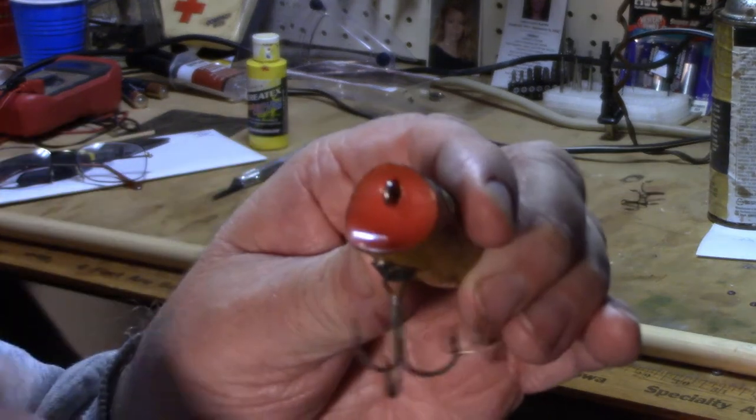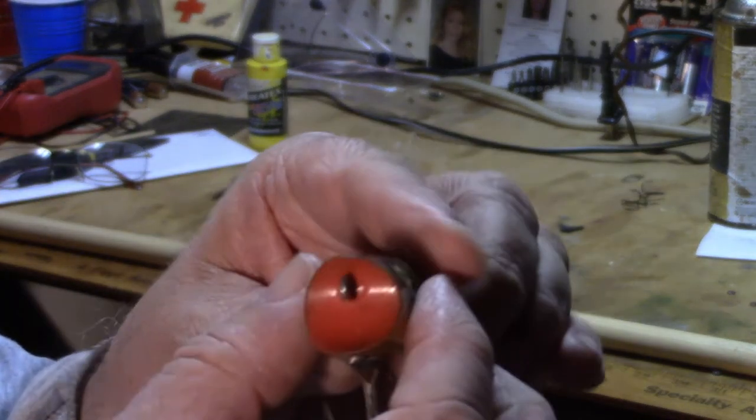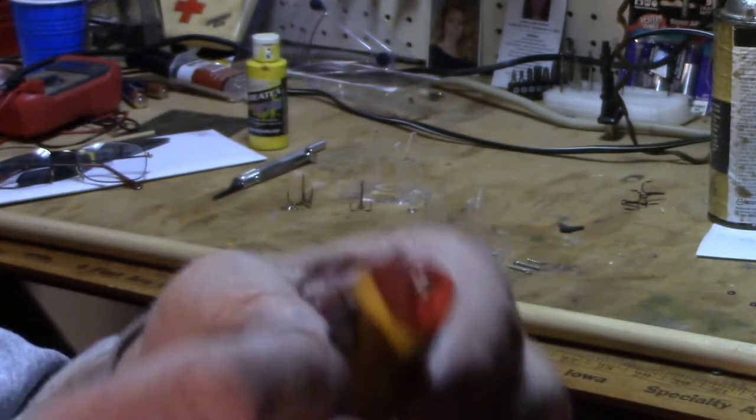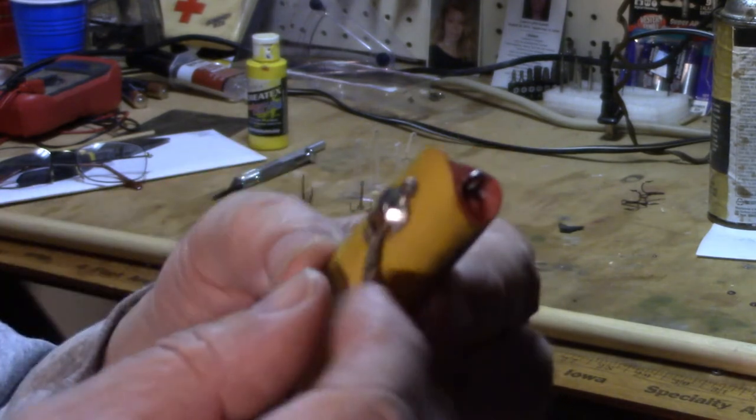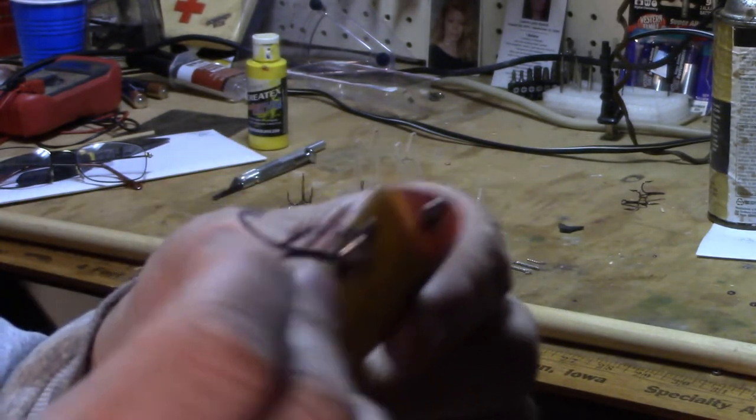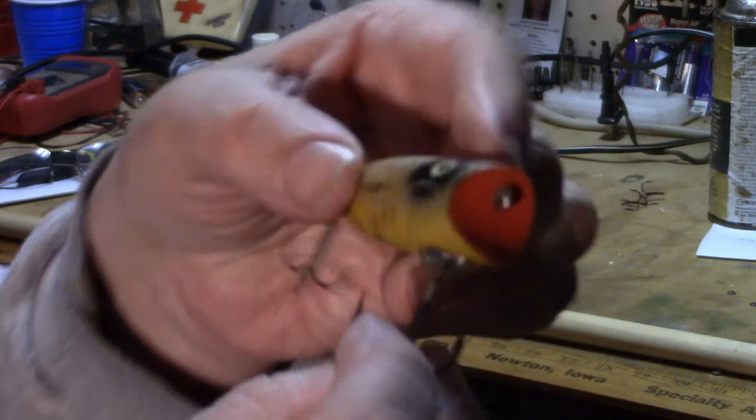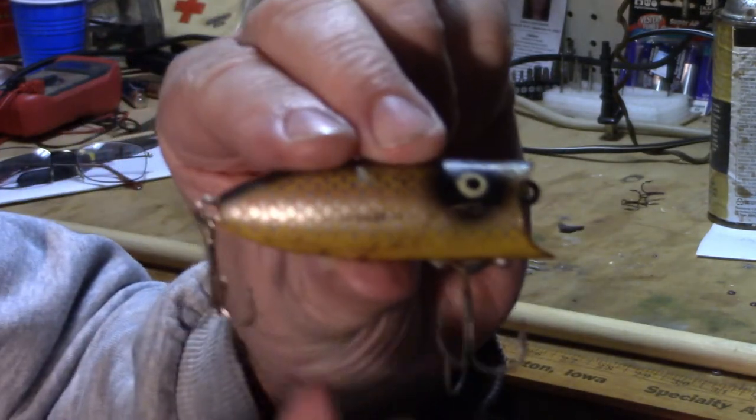This screw eye is up kind of high compared to center. It's got a hook hanger on it, and I think I'm going to put a hook hanger on mine to help keep the hook from getting caught up in the line. I've noticed the hooks are different sizes - this is a much smaller hook than this hook.